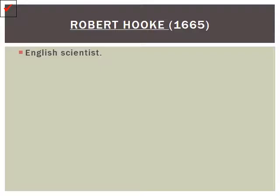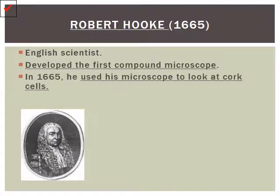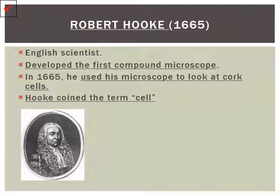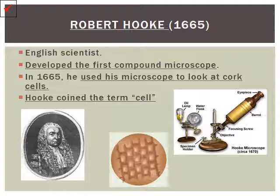The first individual we're going to discuss is Robert Hooke. He was an English scientist, well known for developing the first compound microscope and being the first individual to look at cells. He took a look at cork under his compound microscope, and what he saw were these small brick-like rectangular chambers. These chambers reminded him of the rooms that monks used to live in, which were called cells — so he coined the term cell.